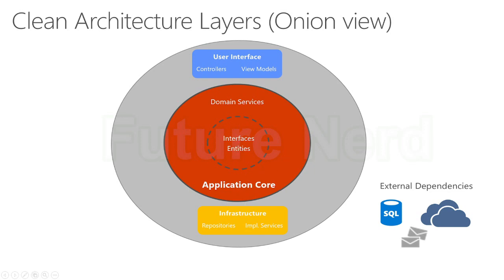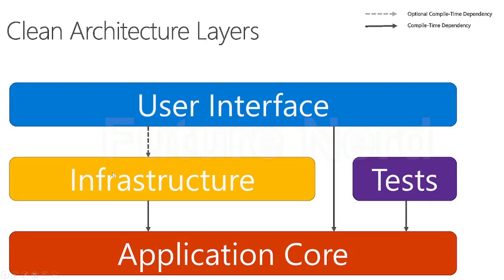In the horizontal diagram you can see that the application core is independent of every outer layer. The infrastructure layer is dependent on the application core. The presentation or user interface layer is dependent on the application core directly. The test layer is only dependent on the application core. The user interface and the infrastructure layer are also independent of each other, though in some cases they can depend on each other as well.